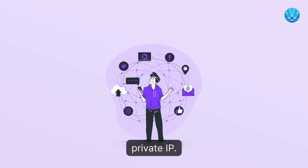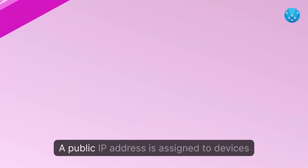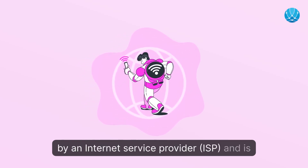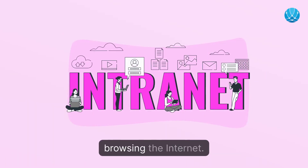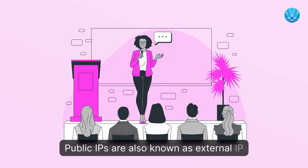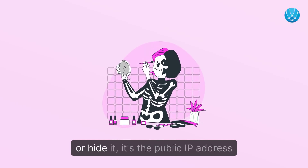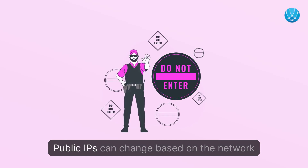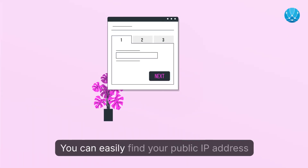What is a public IP address? A public IP address is assigned to devices by an internet service provider (ISP) and is used to connect to the internet. It is the address that is visible when browsing the internet. Public IPs are also known as external IP addresses. If you want to keep your IP private or hide it, it's the public IP address you need to cover. Public IPs can change based on the network your device is connected to.